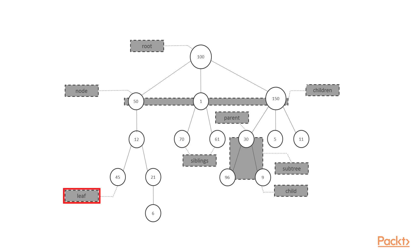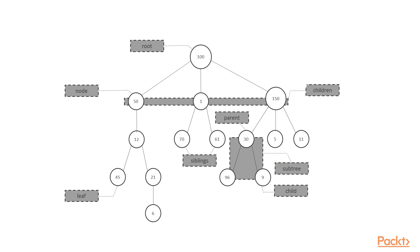A node without children is named a leaf, such as 45 and 6 in the diagram. Take a look at the rectangle with three nodes — that is, 30, 96, and 9. Such a part of the tree can be called a subtree. Of course, you can find many subtrees in the tree.